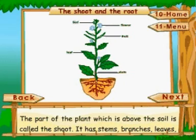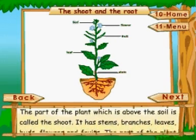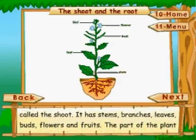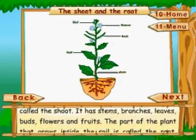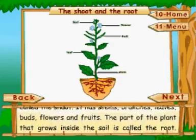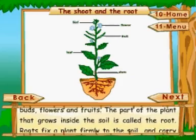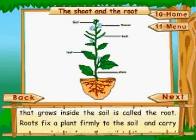The shoot and the root. The part of the plant which is above the soil is called the shoot. It has stems, branches, leaves, buds, flowers, and fruits. The part of the plant that grows inside the soil is called the root.